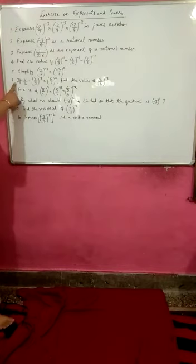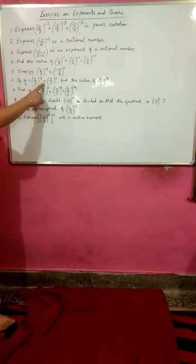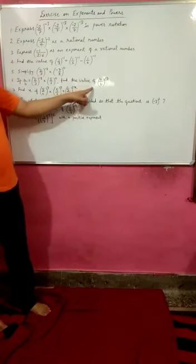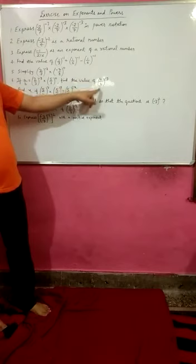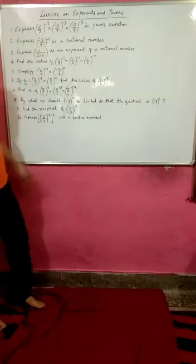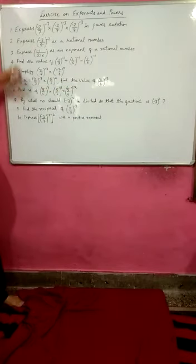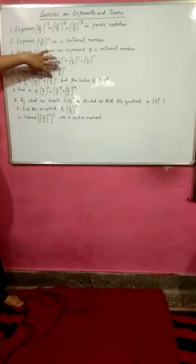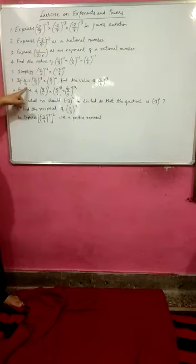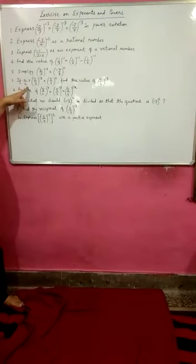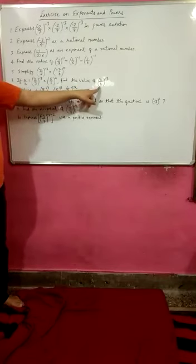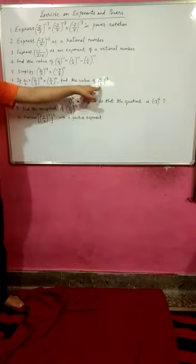Next question: if a/b equals (2/3)^-3 into (5/6)^0, we have to find out the value of (a/b)^-3. First, you will solve the product of these two values, then you will get the value of a/b, and then use this value of a/b to solve (a/b)^-3.